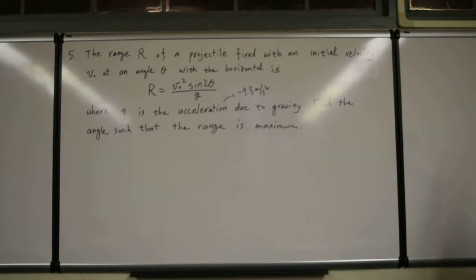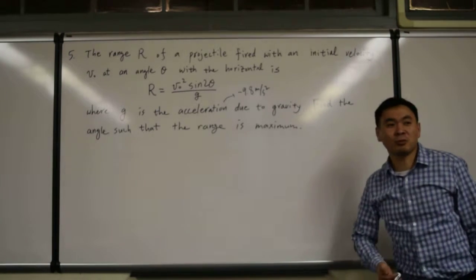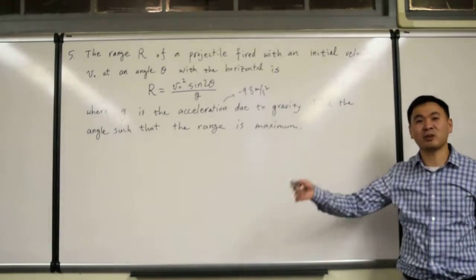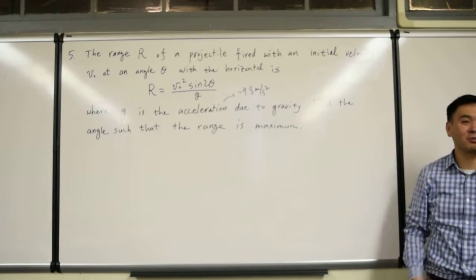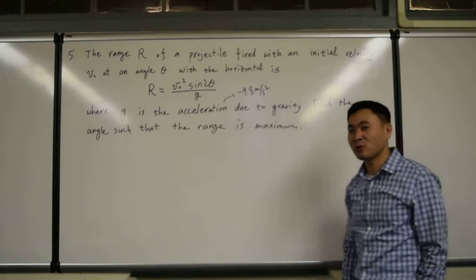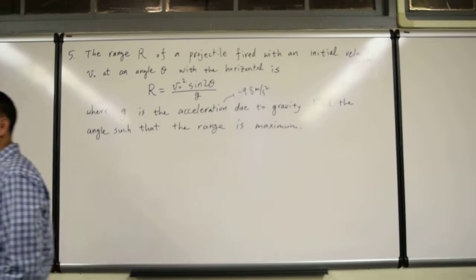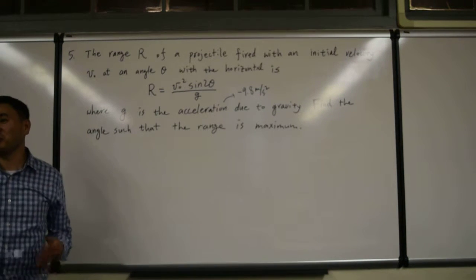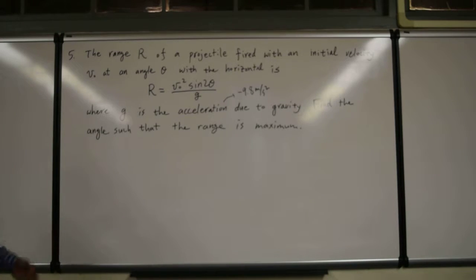Find the angle such that the range is maximum. Actually, without really resorting to calculus, we know the answer to this. What is the angle? 45 degrees. If you shoot it at an angle of 45 degrees, you will get the maximum range. But wouldn't it be cool to actually use calculus to verify that? So let's try that.